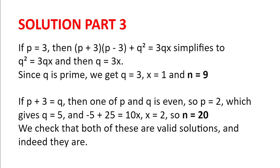Looking when p equals 3, we find p plus 3 multiplied by p minus 3 plus q squared equals 3qx simplifies to q squared equals 3qx. And then that simplifies to q equals 3x. Now, since q is prime, we get q equals 3, x equals 1, and so n equals 9.